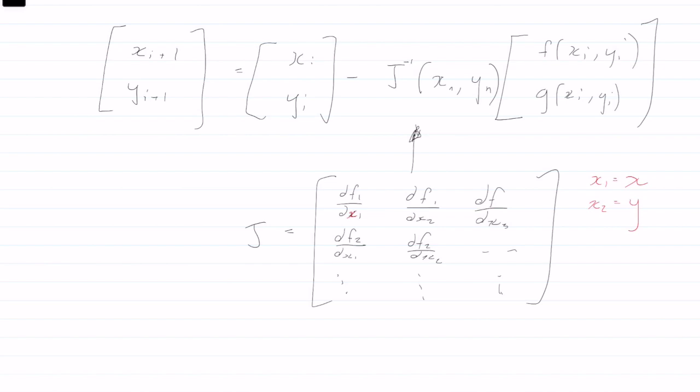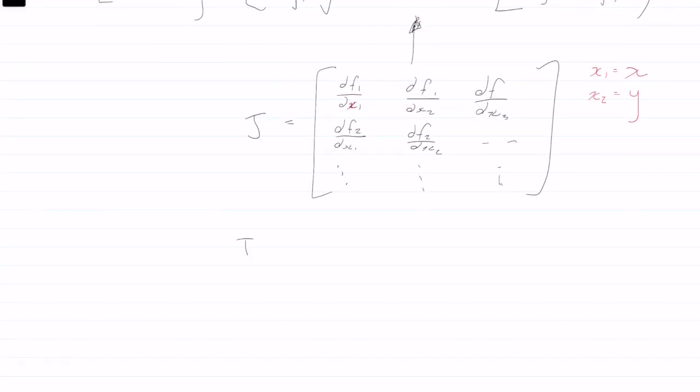So for a 2 by 2 matrix, the Jacobian would look like this. Jacobian would be the function, first function in terms of x, and the second function in terms of x,